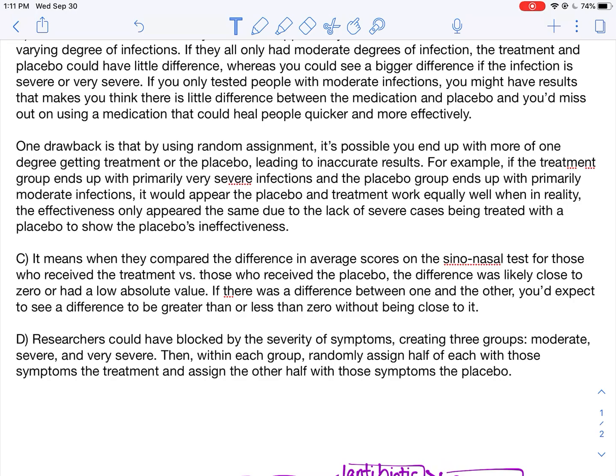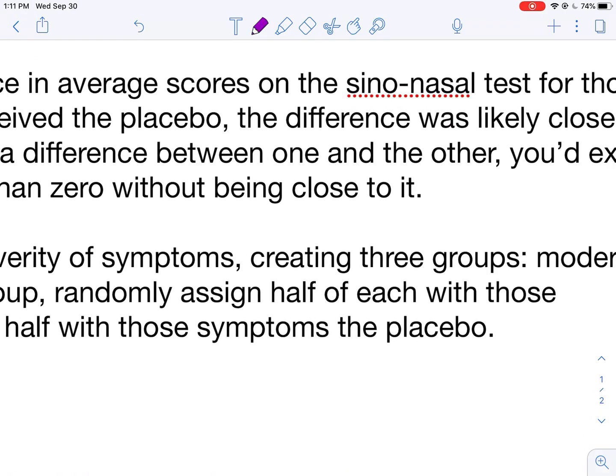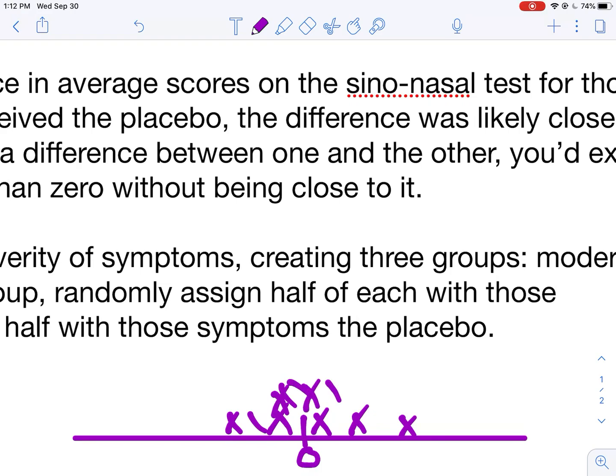So when you compare the difference in average scores on the sino-nasal test for those who received treatment versus those who received the placebo, it probably means the difference was close to zero or have very low absolute value. Maybe you noticed there was a difference of one on either end, which isn't super significant. If there was a difference between one and the other, you'd expect to see a difference that would be greater than or less than zero without being really close to it. So as an example, like say you had a dot plot and you're plotting your differences, right? You have zero, and again like this isn't a matched pairs design but if it was, right, like if you were measuring people with differences, right, if it was matched pairs you'd expect to see a lot of differences right here near zero.